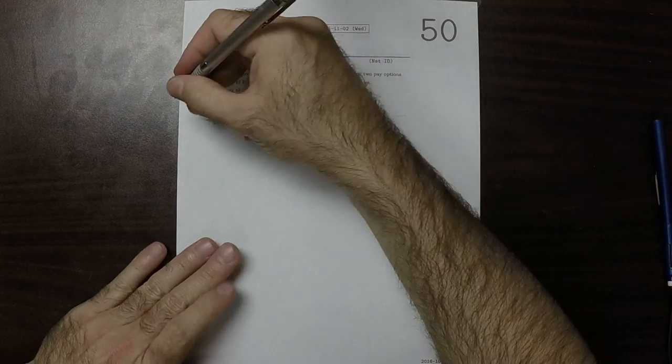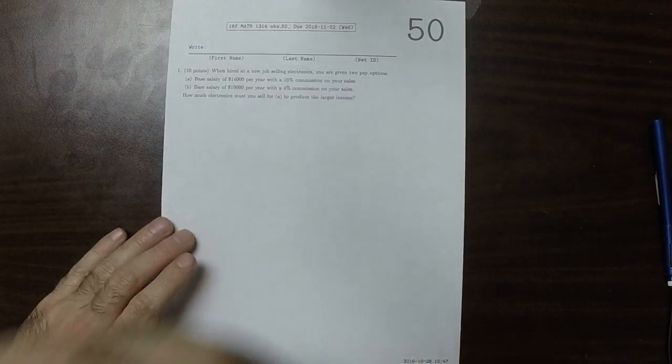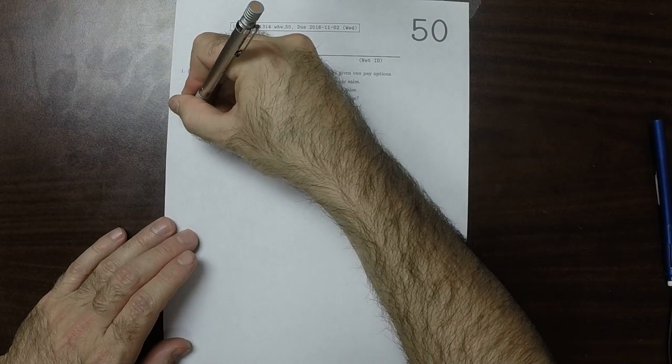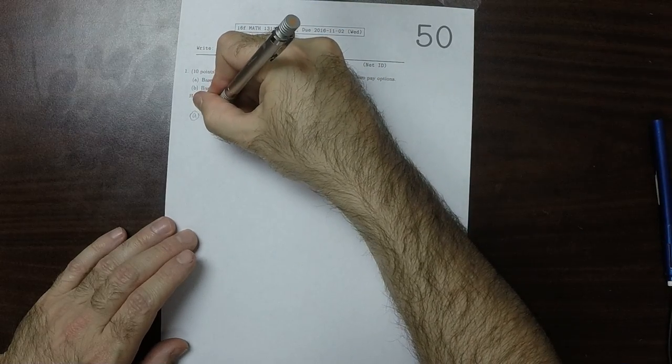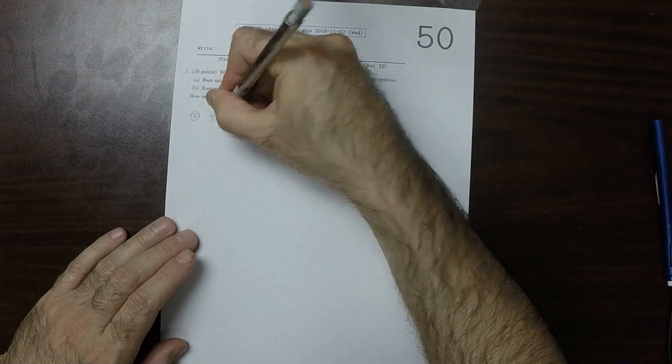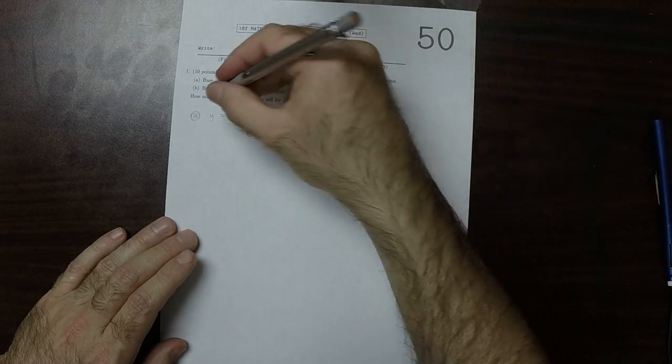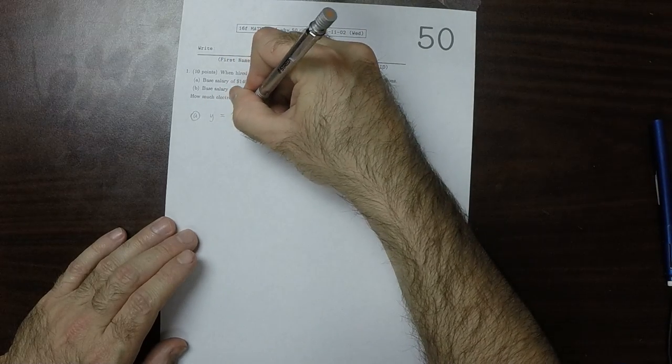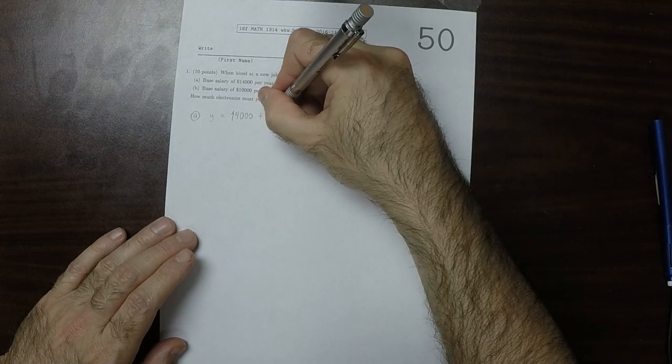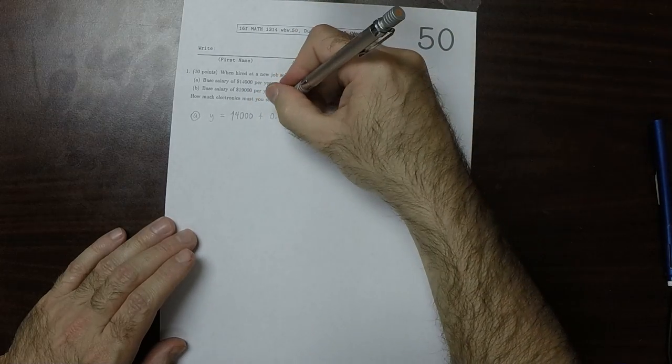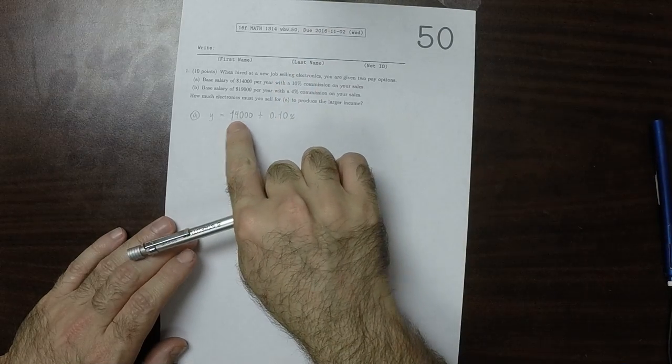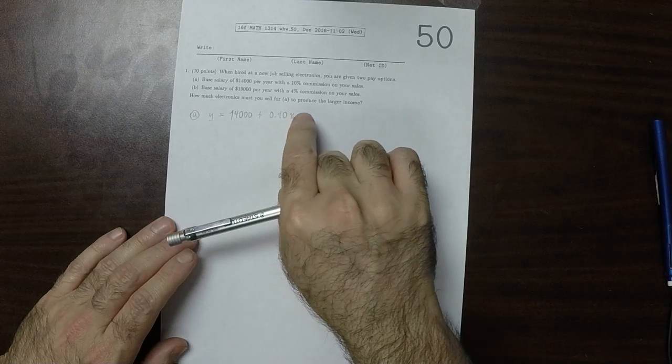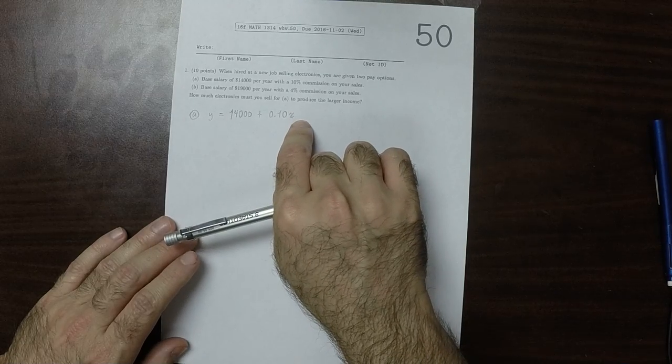This is the solution to written homework 50. Option a is equivalent to a linear function: y equals 14,000 plus 0.10x. So $14,000 per year and 10% commission on your sales x.